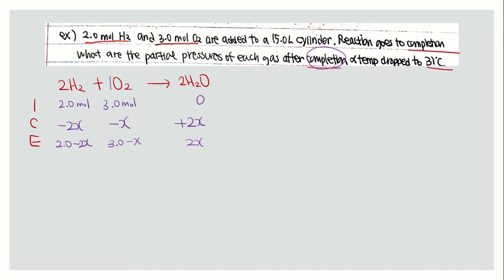At equilibrium, the amount of H2 will be 0 moles because it will be depleted. Since 2 minus 2x equals 0, you now know that x equals 1.0.